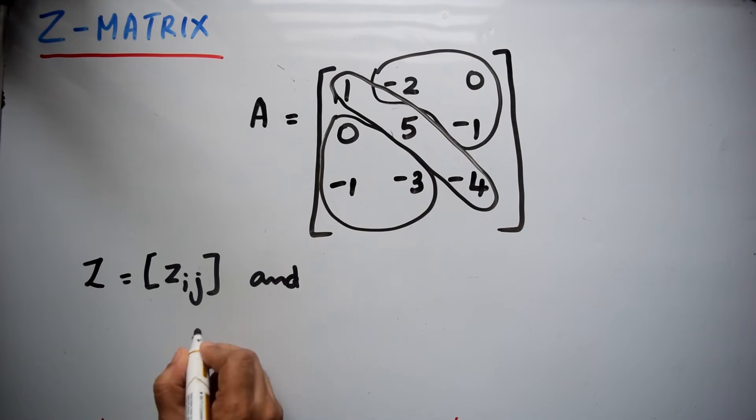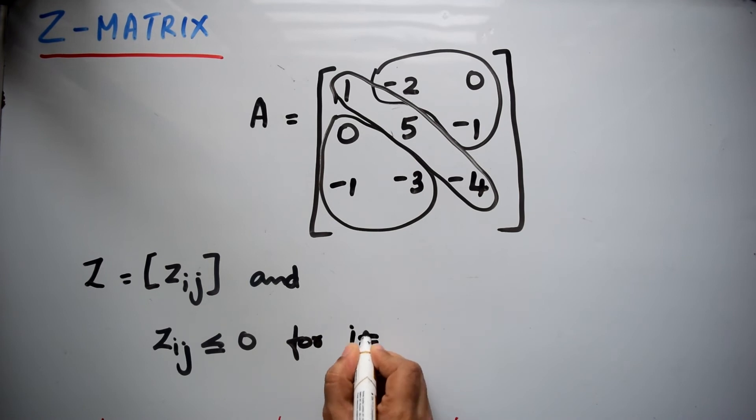And Zij is less than or equal to zero for i not equal to j.